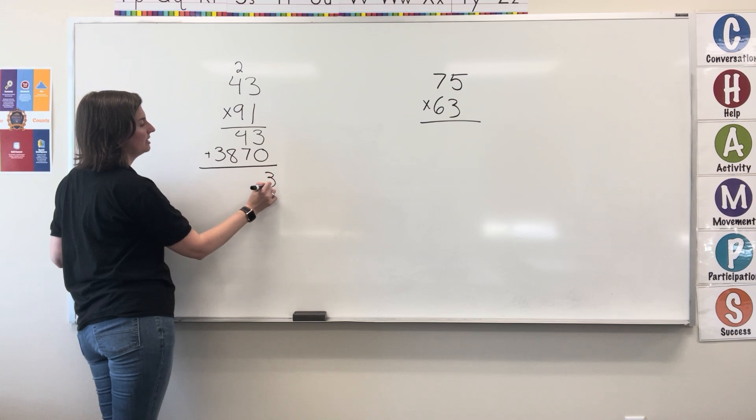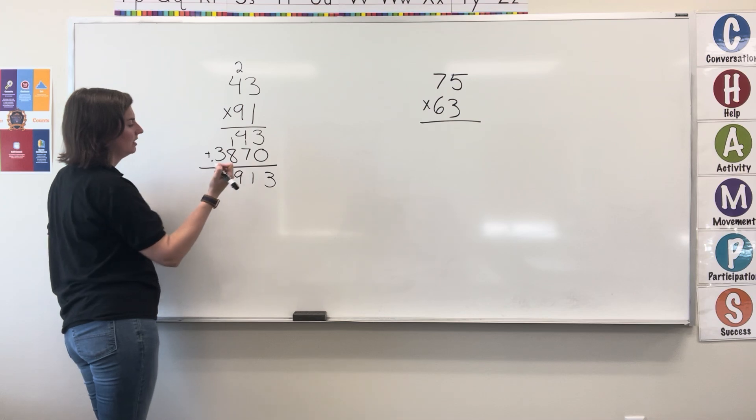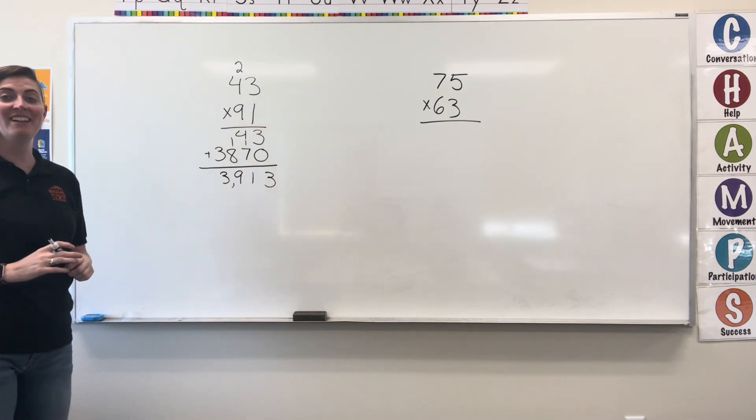3 and 0 is 3. 11, 9, don't forget your commas, 3,913.